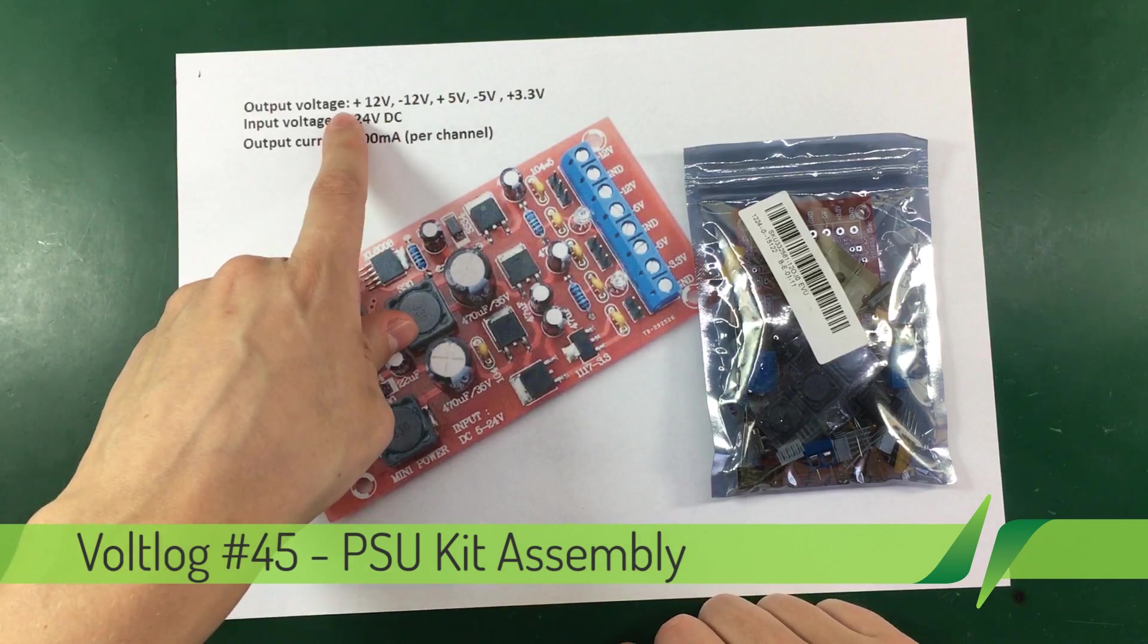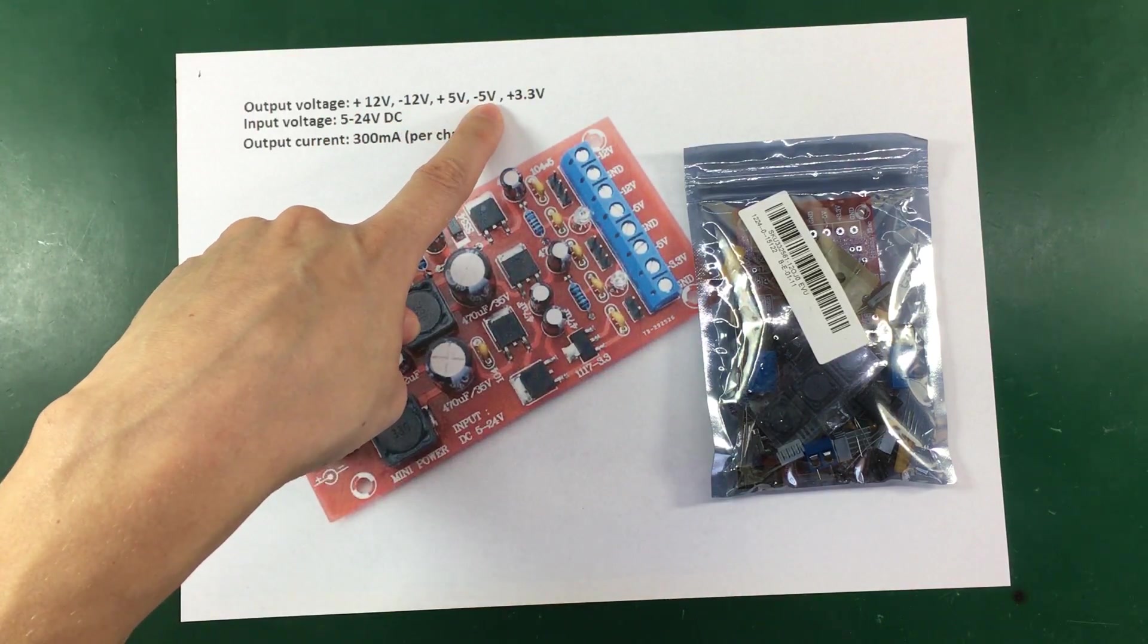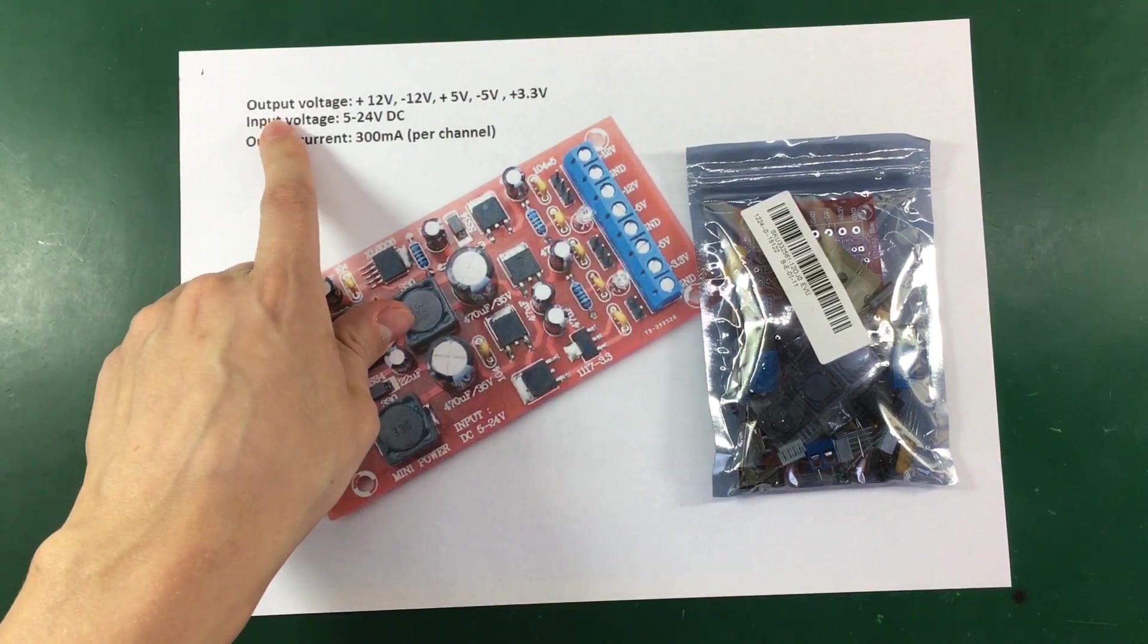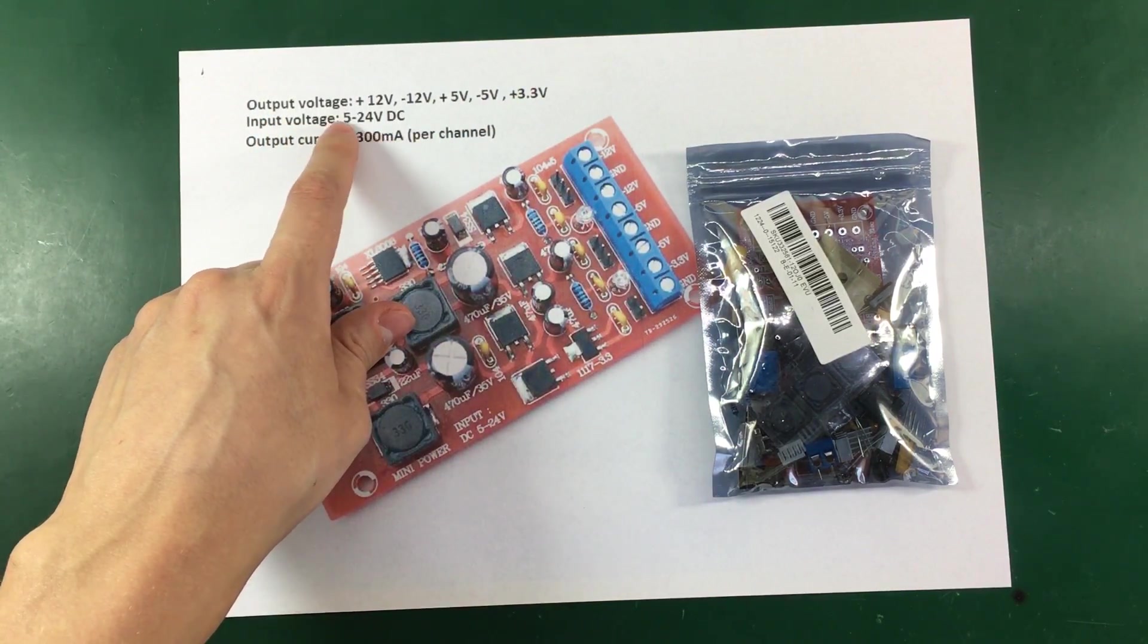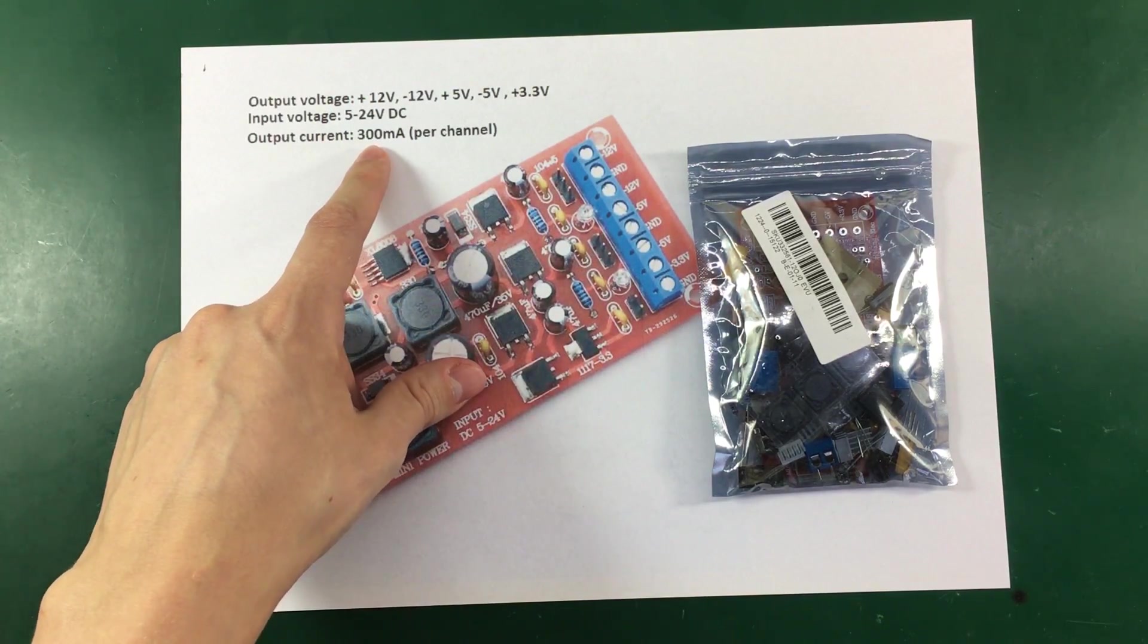It has 5 rails and they're supposed to be plus and minus 12 volts, plus and minus 5 volts, and plus 3.3 volts. The input should be between 5 and 24 volts DC and each channel should be able to output 300 milliamps.